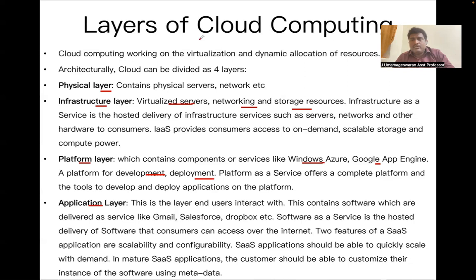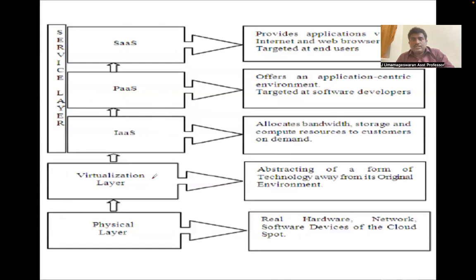To summarize: if asked about the layers of cloud computing, there are four layers. The physical layer is a collection of physical components like physical servers and networks. The infrastructure layer provides virtualized servers, networking, storage, and resources. The platform layer provides a platform for developing and deploying applications. The application layer is where end users interact with the cloud — examples include Gmail, iCloud, Dropbox, and Google Drive.